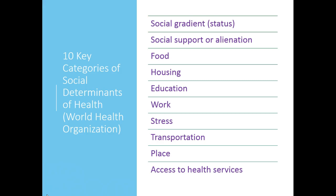Place is the next category. Where you live affects your health. For example, those living in rural areas have fewer health services available nearby, whereas those living in urban areas are exposed to more air pollution from factories and vehicles. Lastly is access to health services. Having access to preventative health services and medical care contributes to overall health. Access to services is often limited by health insurance. On a broader scale, having an appropriate number and type of health care professionals is instrumental to maintaining the health of individuals and populations.